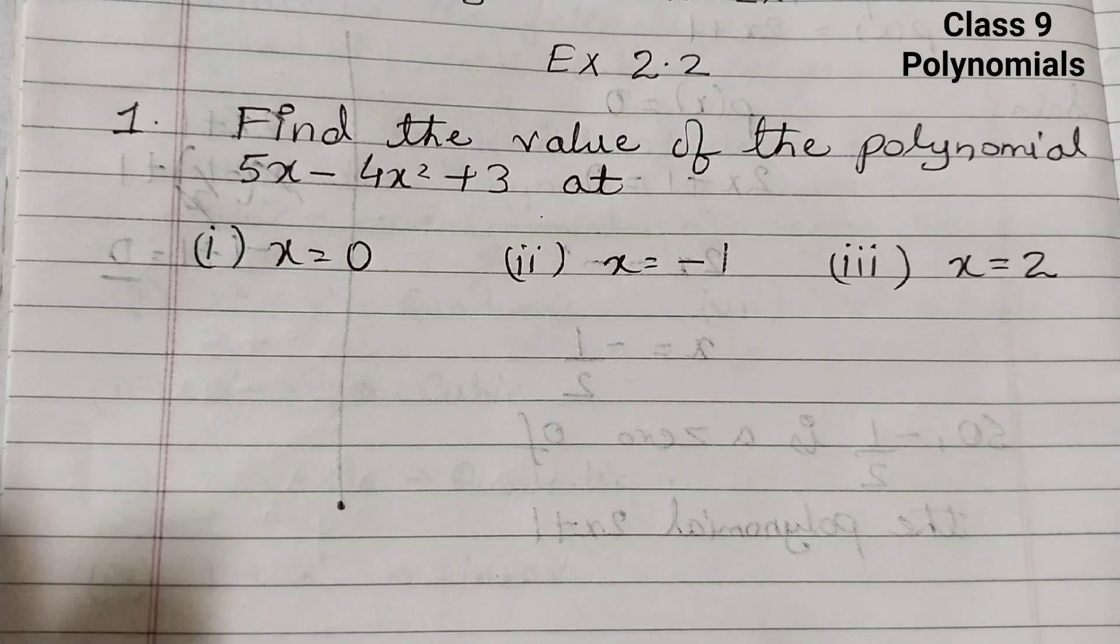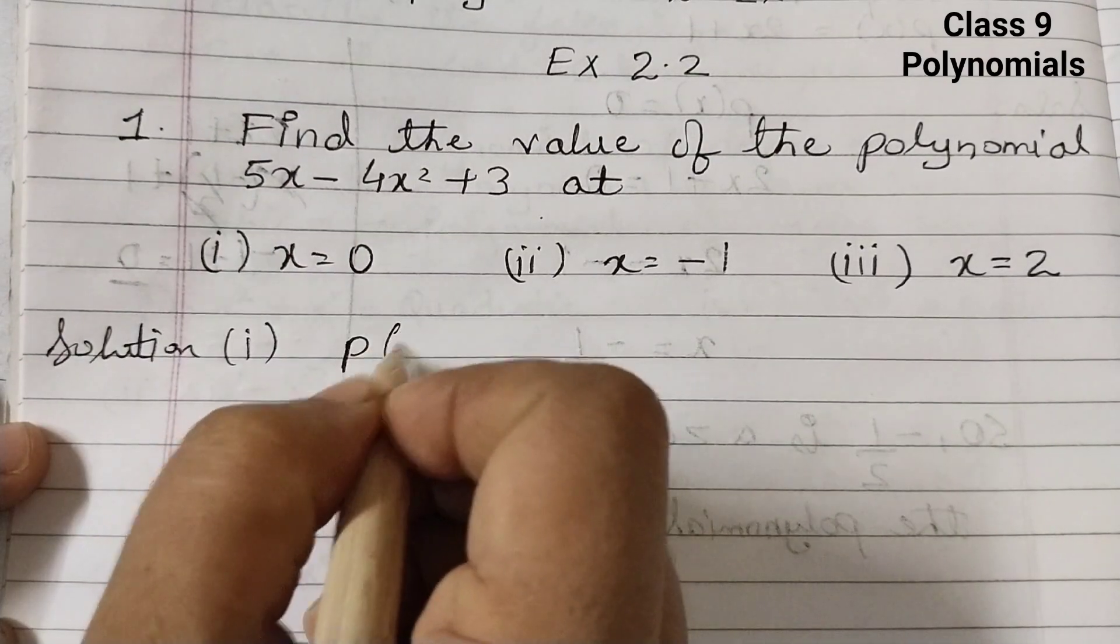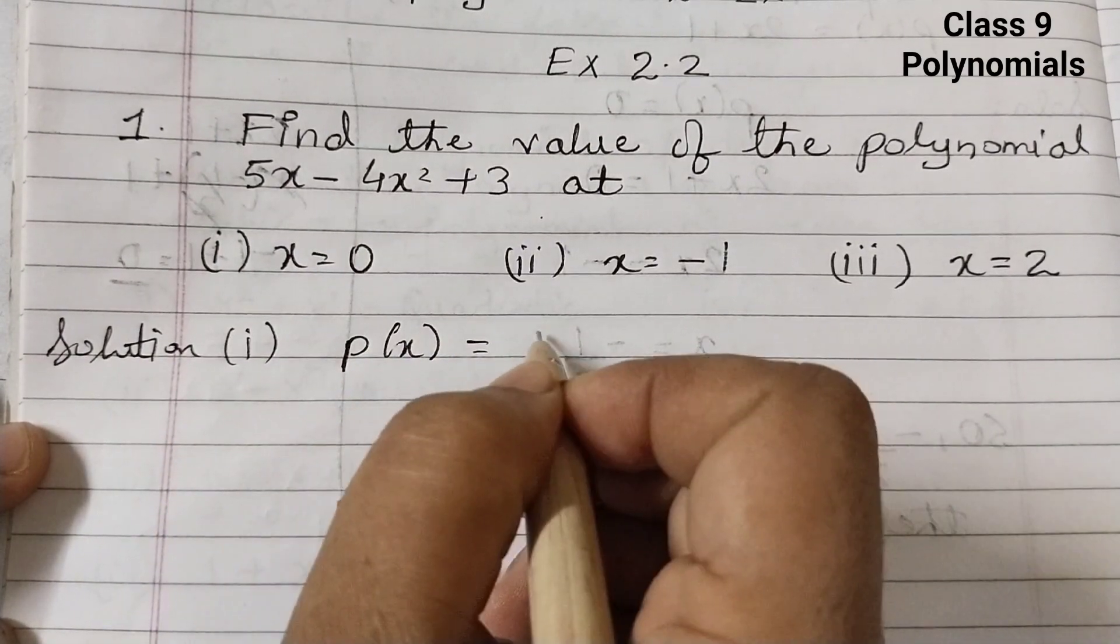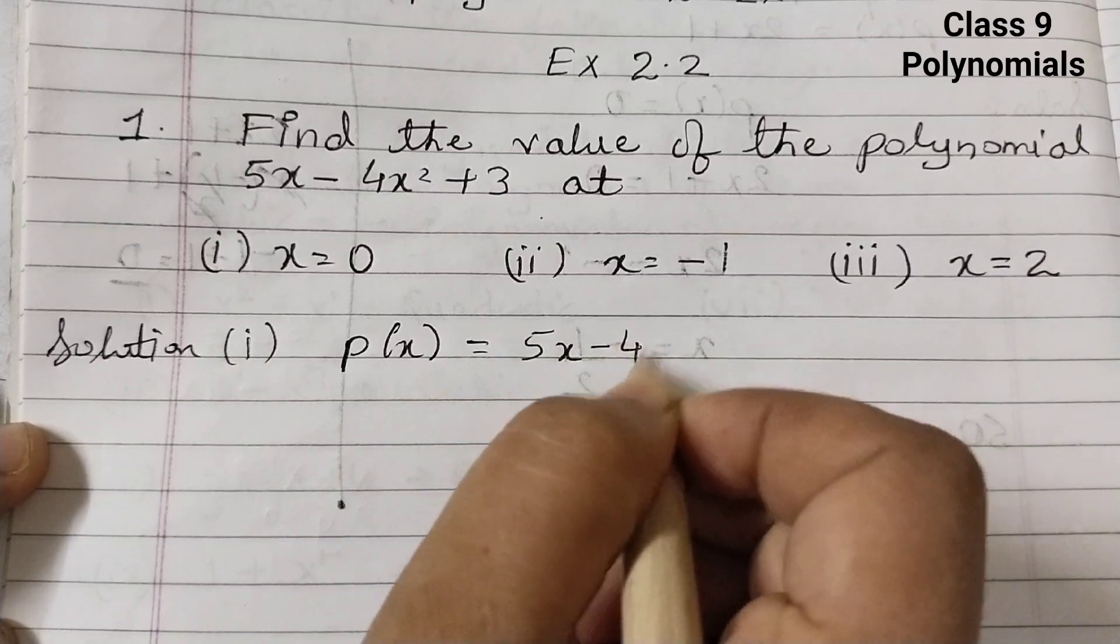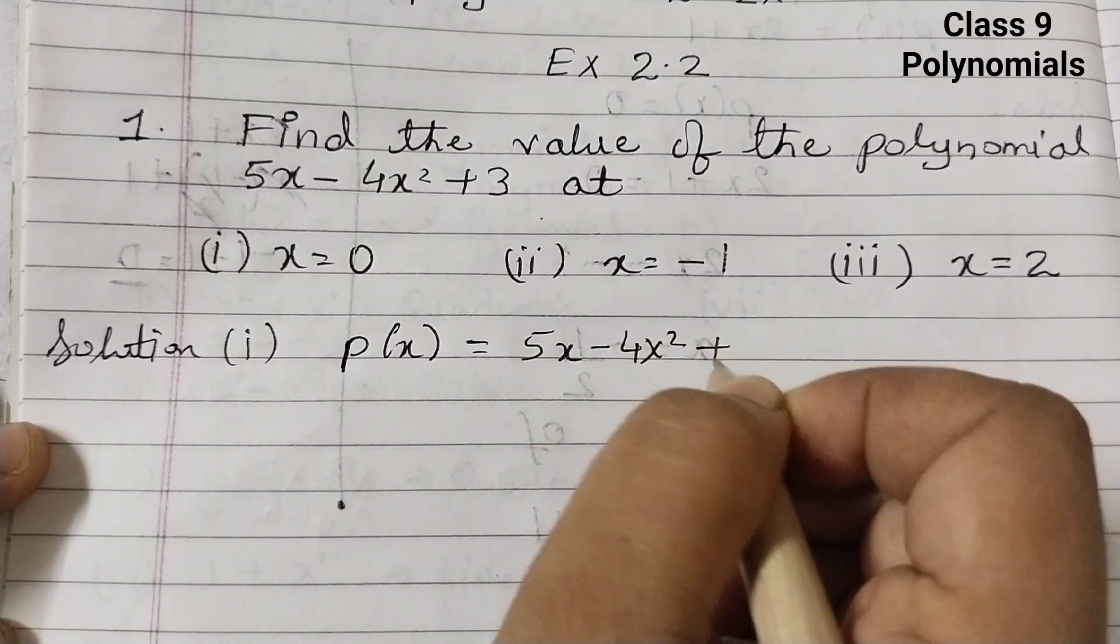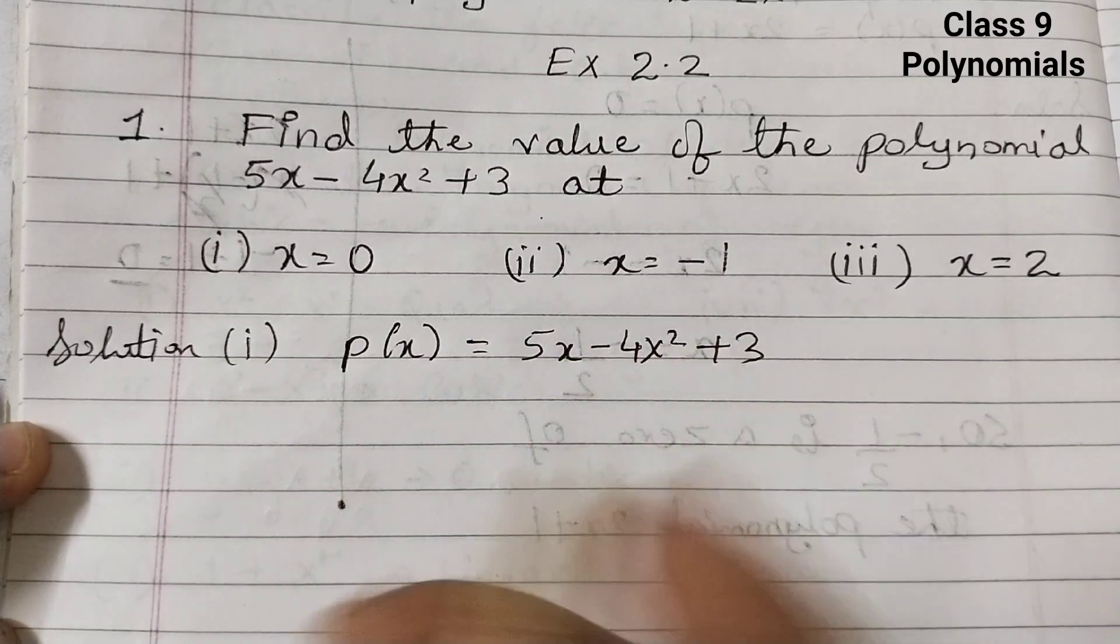p of x equals 5x minus 4x squared plus 3. We have just given a name p of x equals to this.